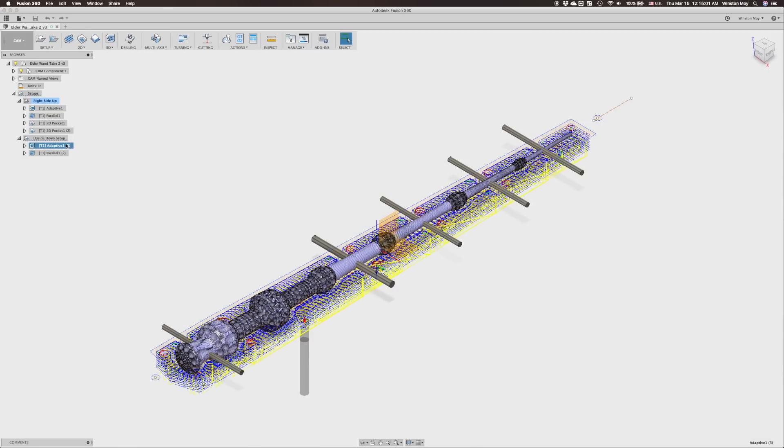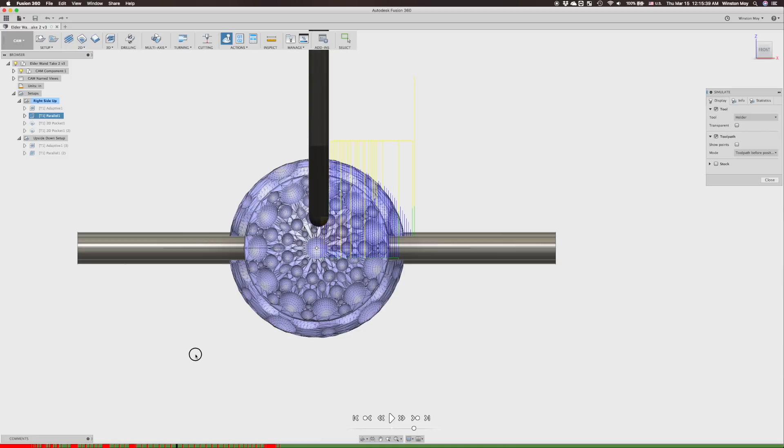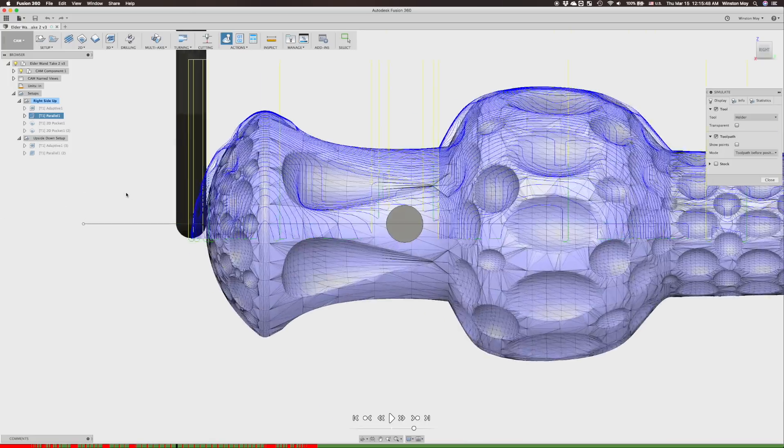On the back side, I would basically do the same process, adaptive clear most of the material, and finish with a parallel toolpath. One thing to note with my parallel toolpath, though, was that my ball end mill needs to plunge to at least one radius below the midpoint of the piece so that it can cut the model from the side.